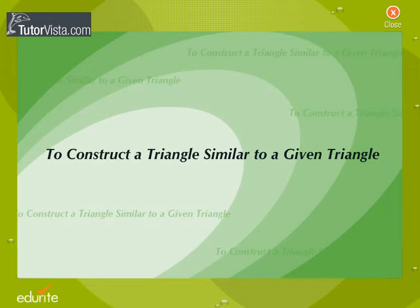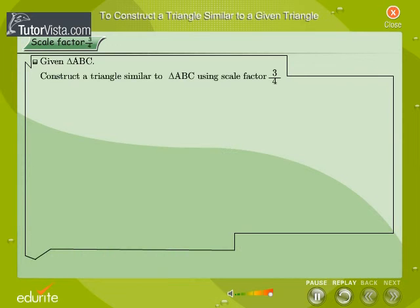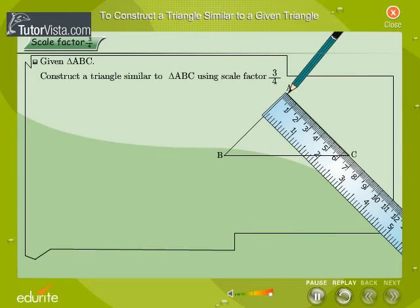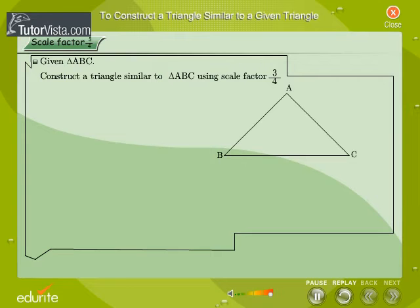To construct a triangle similar to a given triangle. We are given a triangle ABC. We want to construct another triangle whose sides are three-fourths of the corresponding sides of triangle ABC.